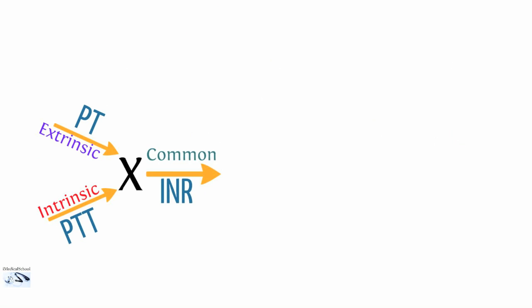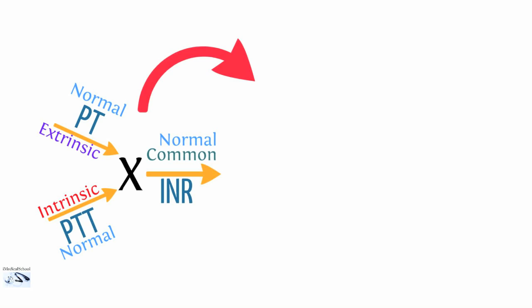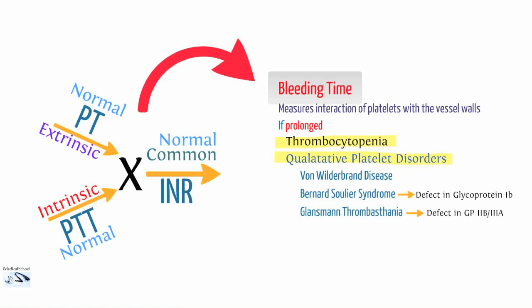Let's take an example of a bleeding problem. In this case our PT is normal, our PTT is normal, and our INR is normal, but the patient is bleeding. So what could be causing this? You first want to obtain a bleeding time. If all your coags are normal and there's no obvious disorder, obtain a bleeding time. The bleeding time measures the interaction of platelets with the vessel wall — if your coags are normal and the patient's bleeding, it must be an issue with platelet interaction itself.